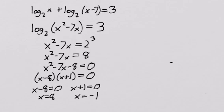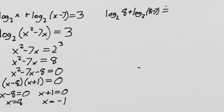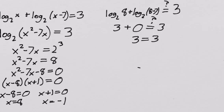For the 8, log base 2 of 8 plus log base 2 of 8 minus 7, we want to make sure that's equal to 3. Well, log base 2 of 8 is 3. 8 minus 7 is 1, and log base 2 of 1 is 0. And we indeed get that 3 is equal to 3. So 8 is okay, but what about the negative 1?